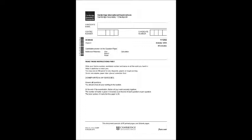Now turn to part three, questions eleven to fifteen. You will hear people talking in five different situations. For each question, circle the correct answer A, B or C. Question eleven: You hear a teacher talking to some schoolchildren about a project they are working on. Why is he talking to them? A: to make a comment on their good work. B: to suggest ways of organising their groups. C: to explain how they can find information they need.